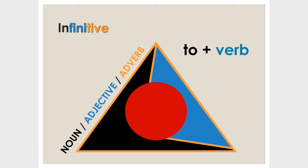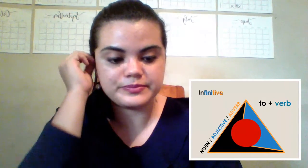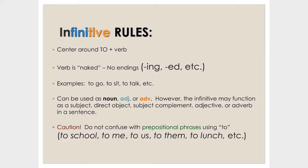An infinitive can work as a noun, as an adjective, and as an adverb too. Now let's see some rules — please take note. The infinitive rules center around 'to' plus a verb in infinitive or base form. The verb is naked — the infinitive form — meaning no endings in -ing, no endings in -ed, no endings in -nt, or other endings. For example: to go, to sit, to talk, to run, to jump.